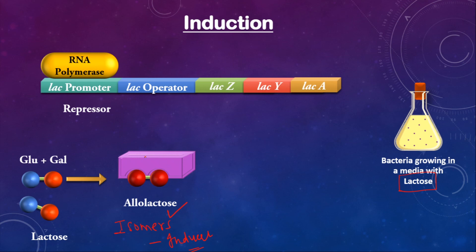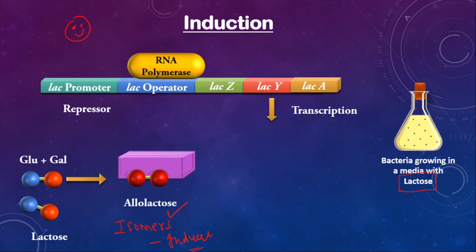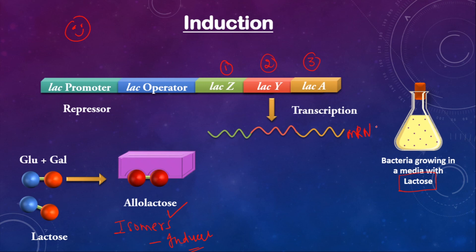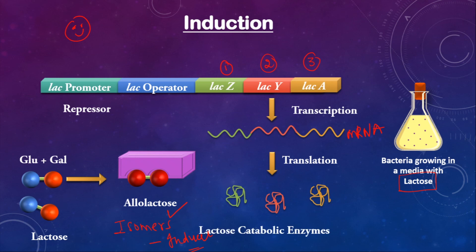Once the repressor is removed, RNA polymerase can move forward and transcribe the three structural genes through the process of transcription, producing an mRNA corresponding to lacZ, lacY, and lacA. This mRNA then undergoes translation, producing the three lactose catabolic enzymes — beta-galactosidase, permease, and acetyltransferase — which are important for the breakdown of lactose so that the cell can derive energy from it.